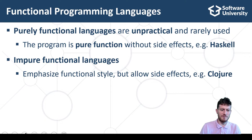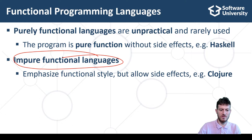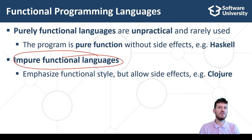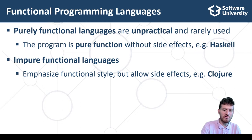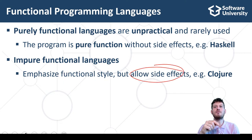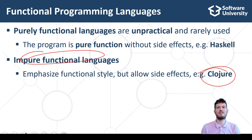Impure functional languages are used more often because they allow exceptions from the concept of pure functions, simplifying the work of developers. These languages emphasize functional style but sometimes allow side effects. An example of an impure functional language is Clojure, which is not very popular in practical software development.